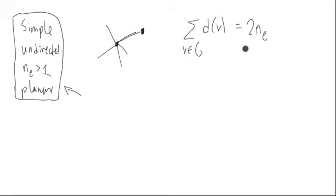Next, how can we use this idea? Well, let's think about this. What if we were to take the average of this sum right here? The average of this sum would simply be to divide by how many things are in the sum, which is the number of vertices.